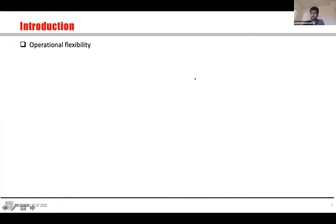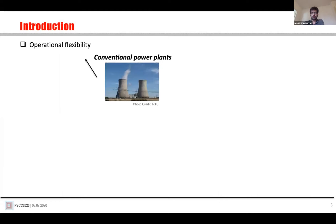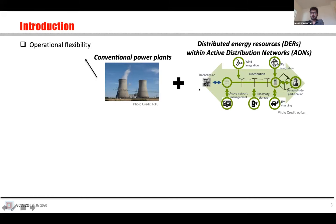In the context of energy transition, operational flexibility is becoming an operational challenge. No flexibility is provided by conventional bulk power plants when we have high penetration of renewable energy sources, resulting in less capacity from conventional plants. The question is who would provide the operational flexibility. One solution is using the capacity of distributed energy resources within an active distribution network.